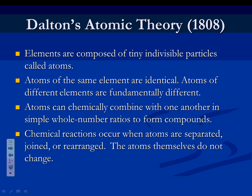Dalton's atomic theory listed the following: elements are composed of tiny individual particles called atoms; atoms of the same element are identical, and atoms of different elements are fundamentally different. Dalton explained why you can't turn lead into gold — there are lead atoms and gold atoms and you cannot turn one into the other. You can only turn compounds into other compounds. Compounds are ratios of elements — simple whole number ratios, a really important phrase to know. And chemical reactions occur when you rearrange, join, or separate atoms. We now know there are bonds, and that's also what Dalton talked about.